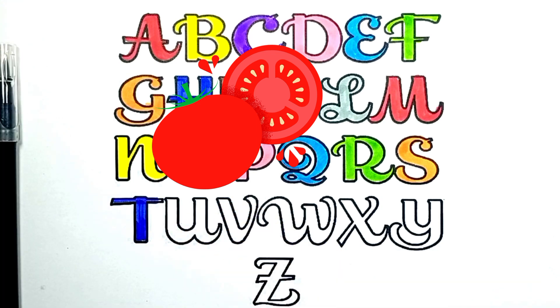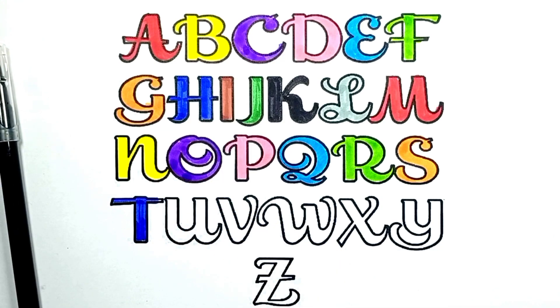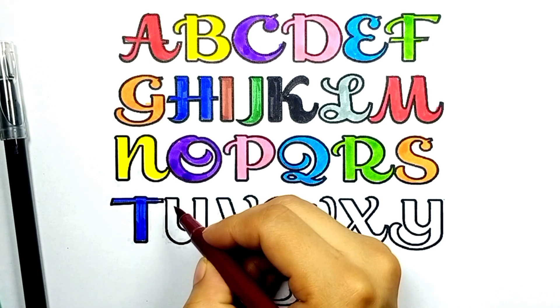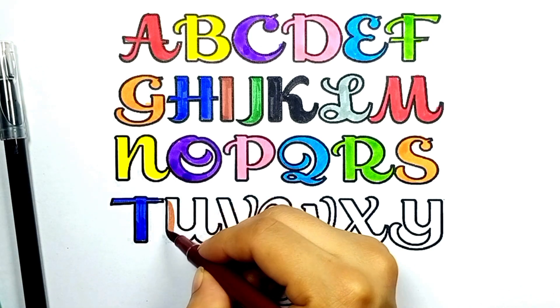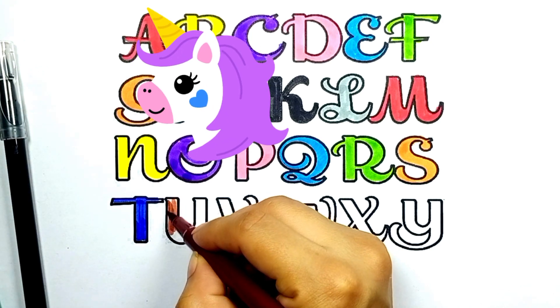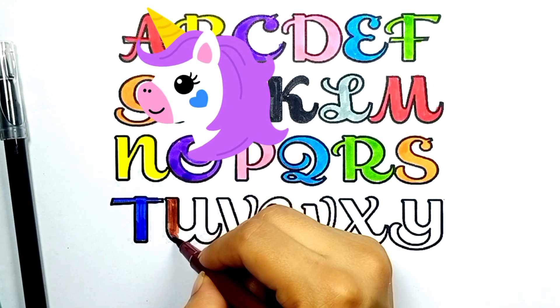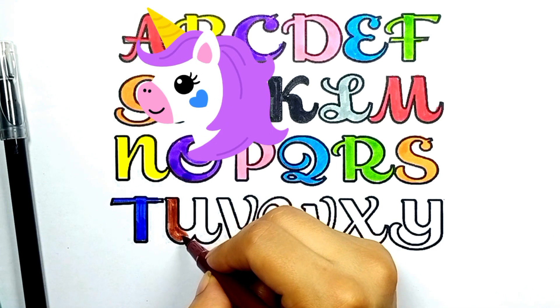Brown color, U. U for Unicorn. W, X, Y, and Z.